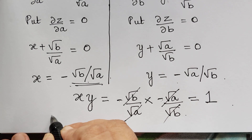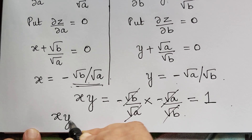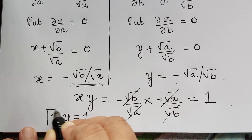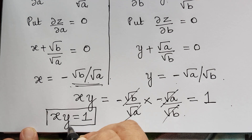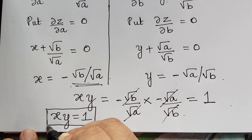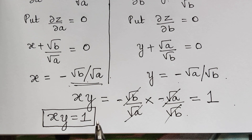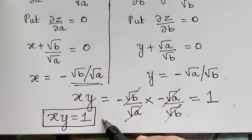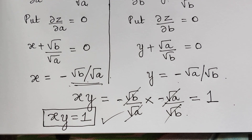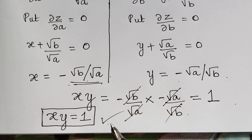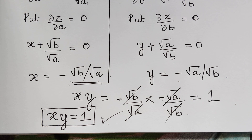Therefore, the singular integral is xy = 1. We have eliminated the arbitrary constants a and b to obtain the singular integral for the given problem. Hope you have understood this problem. Kindly follow the next video lecture for problem 3 under type 4. Thank you.